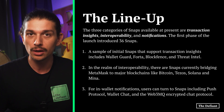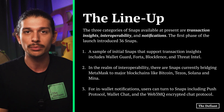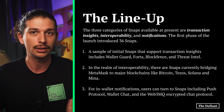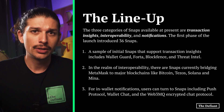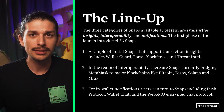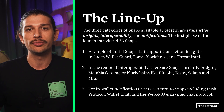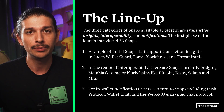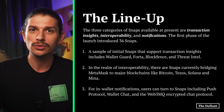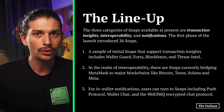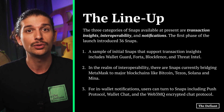In the realm of interoperability, the currently available snaps allow bridging from MetaMask to major blockchains like Bitcoin, Tezos, Solana, and Mina. MetaMask users can more easily interface with decentralized apps that use the XMTP protocol by signing in via the Sign In With XMTP snap. For in-wallet notifications, users can turn to snaps including Push Protocol, Wallet Chat, and the Web3MQ encrypted chat protocol.